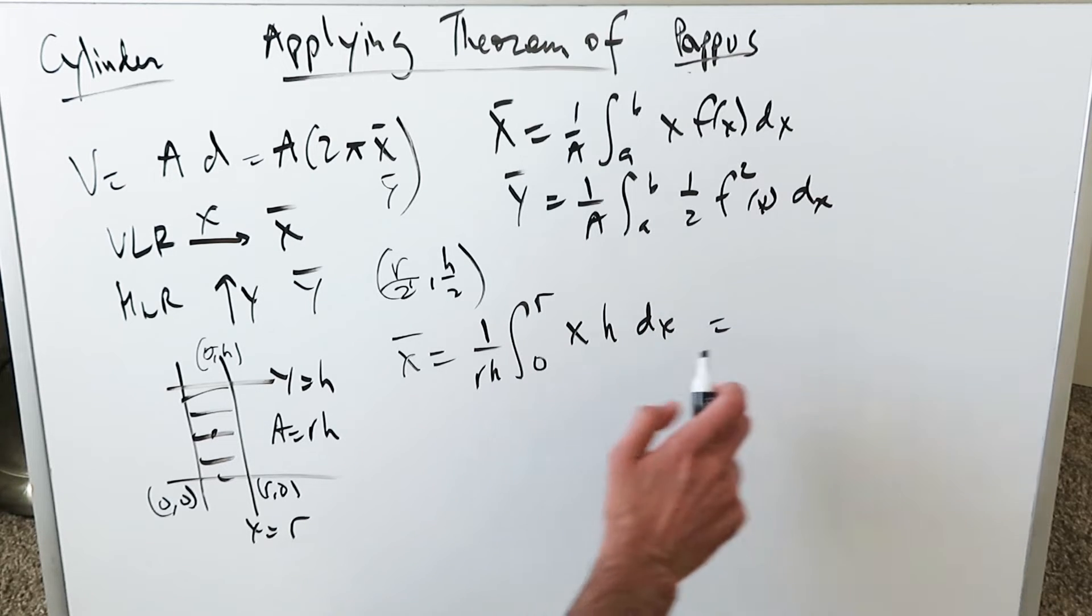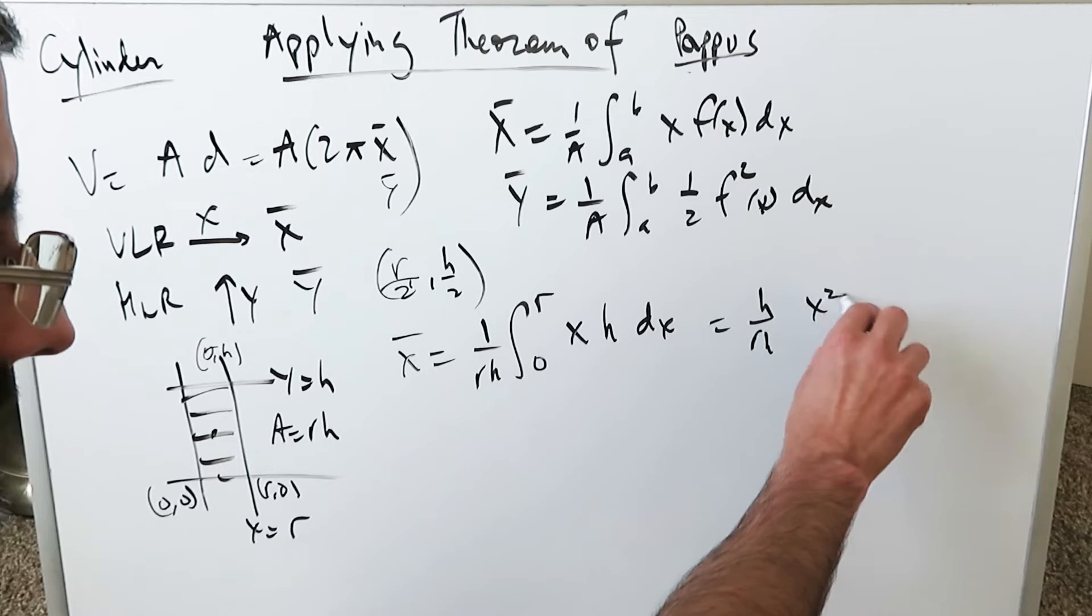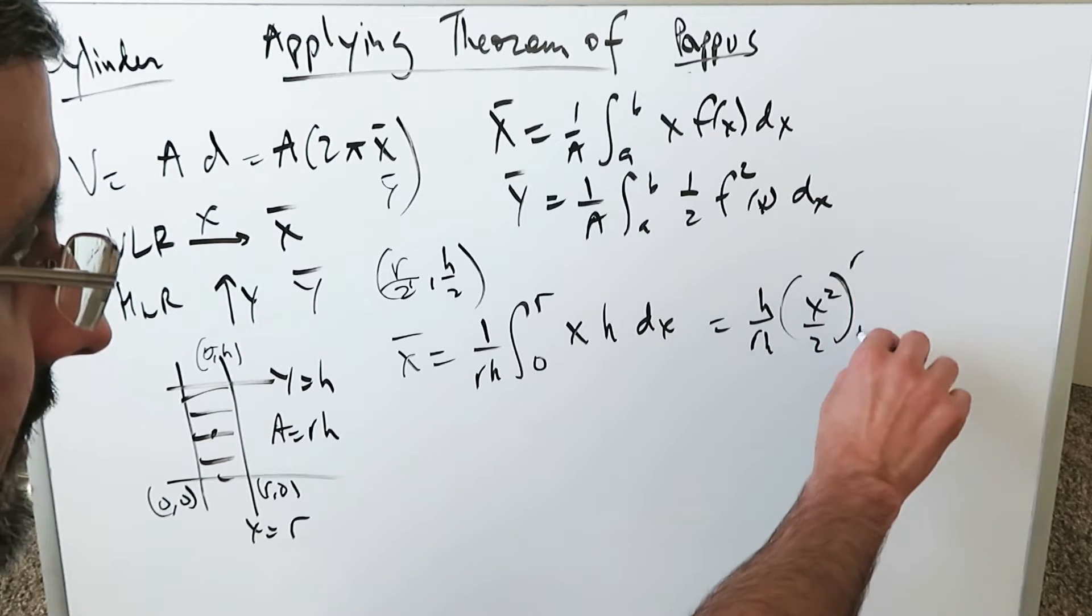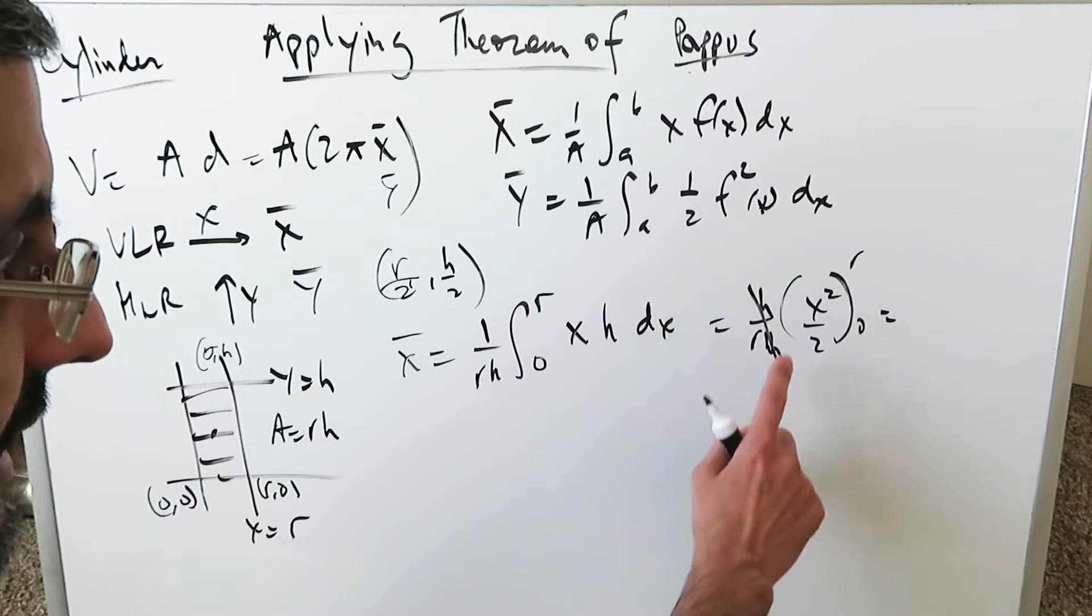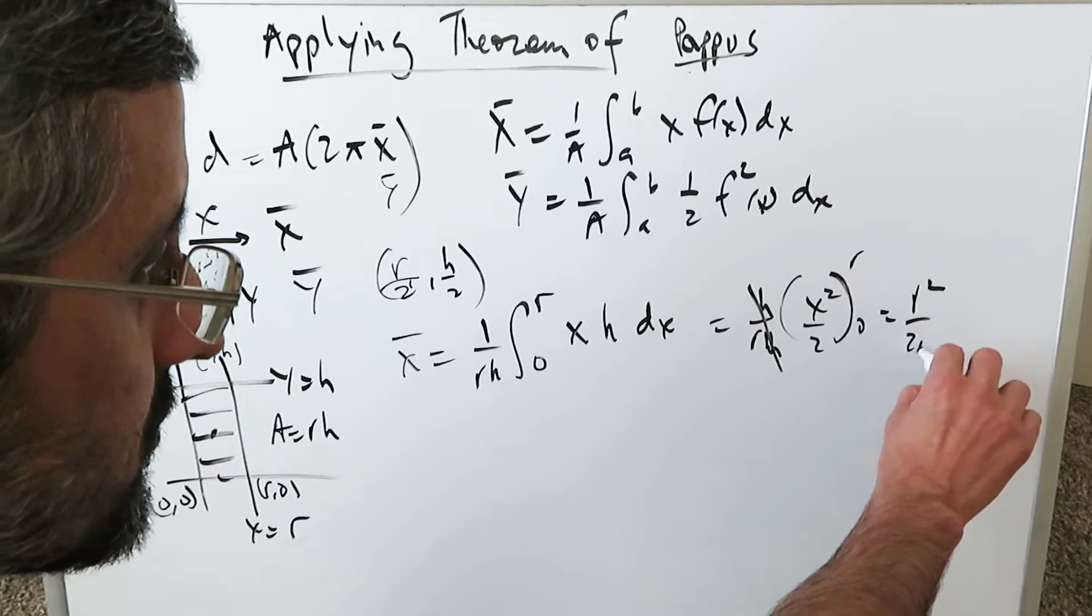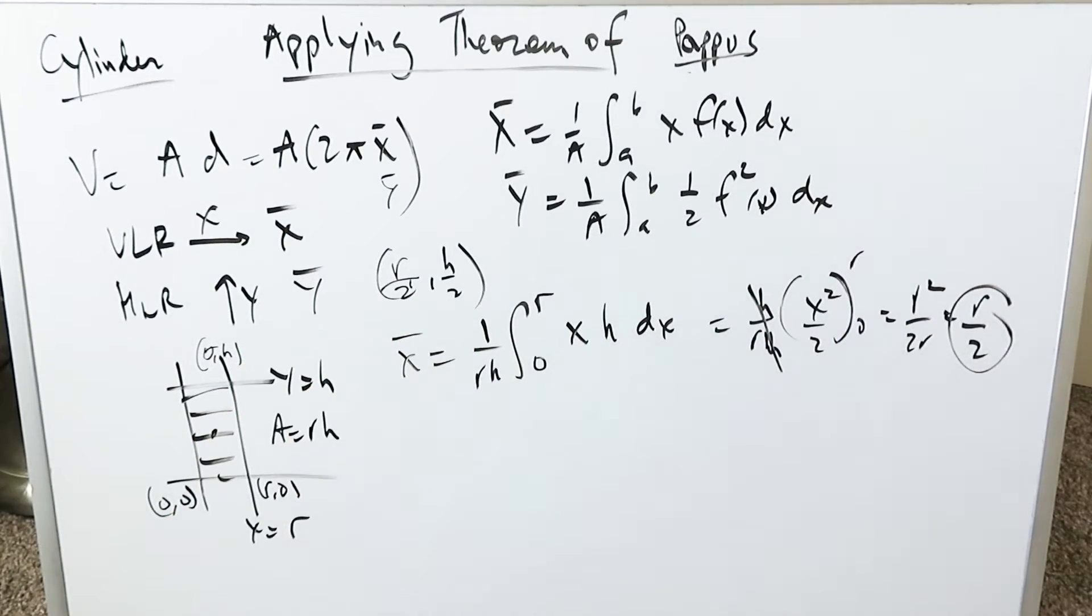Run this through. h can come out. h over rh. The antiderivative of x is x squared over 2, everything from r and 0. Plug away. These h's will cancel out. You'll have r squared over 2r which will be r over 2.